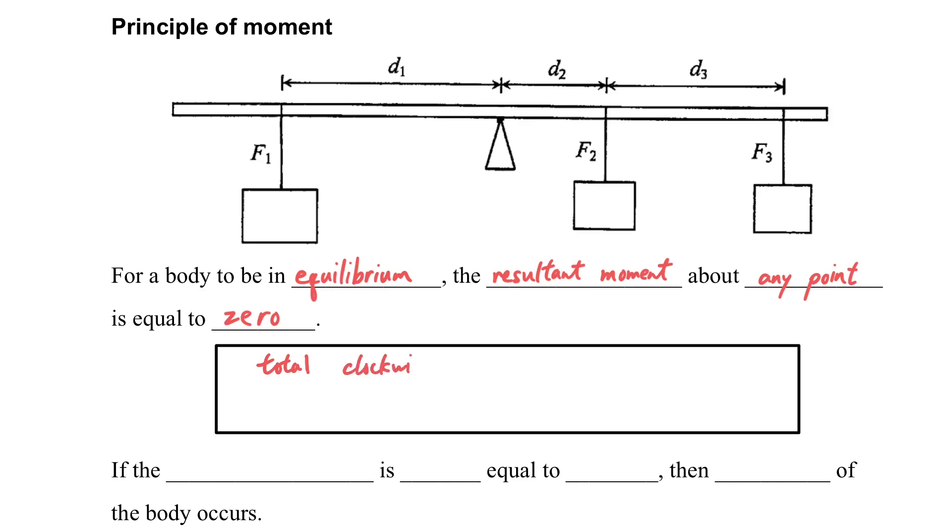What does this mean by net moment equal to zero? That means the total clockwise moment will be equal to the total anticlockwise moment. Now, the idea is like the force.